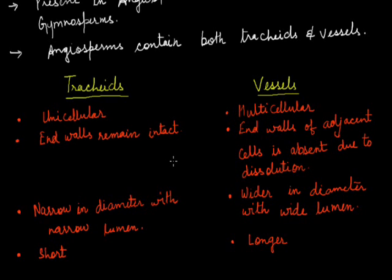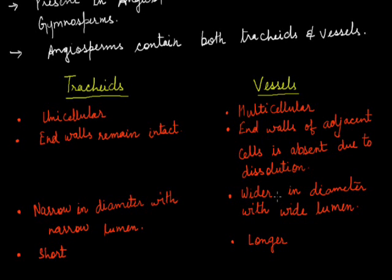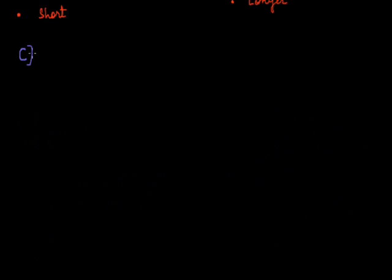The differences between tracheids and vessels can be summarized as follows: tracheids are unicellular elements whereas vessels are multicellular. The end walls of adjacent cells remain intact in tracheids, but are absent due to dissolution in vessels. Tracheids have a narrow diameter and narrow lumen, whereas vessels have a wider diameter and wide lumen. Tracheids are shorter elements whereas vessels are longer.